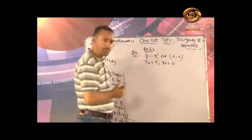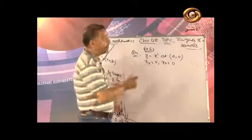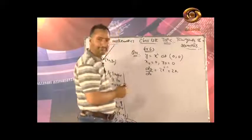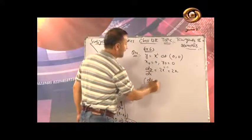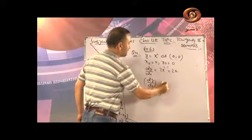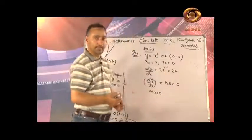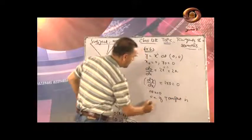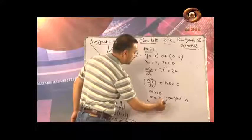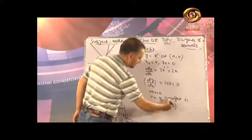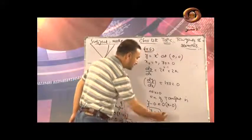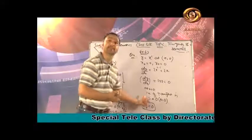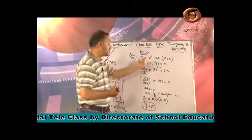First, differentiate y = x²: dy/dx = 2x. At x = x₀ = 0: dy/dx = 2×0 = 0. So slope of tangent = 0. Equation of tangent: y - 0 = 0 · (x - 0), which gives y = 0. This is the equation of the x-axis, so the x-axis is the tangent to y = x² at (0,0).